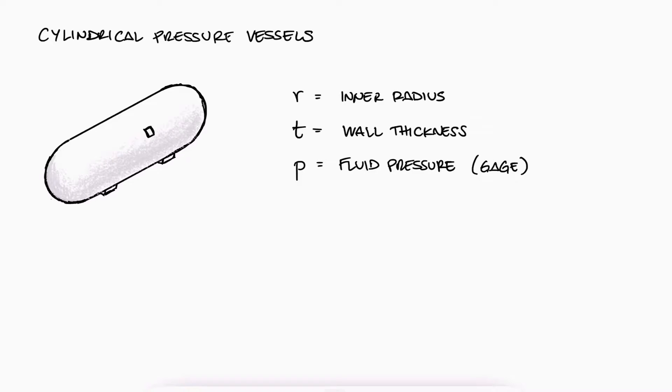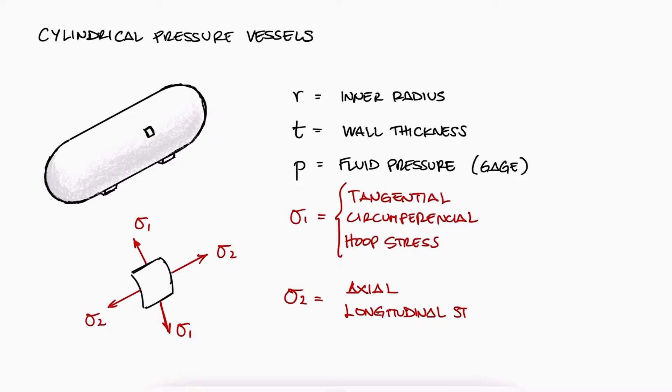The stresses on the surface are labeled sigma1 and sigma2, where sigma1 is the tangential, circumferential, or most commonly, the hoop stress. Sigma2 is the axial or longitudinal stress.